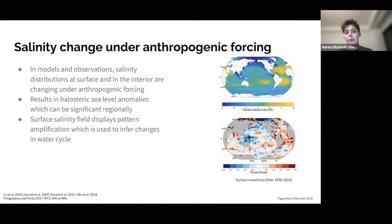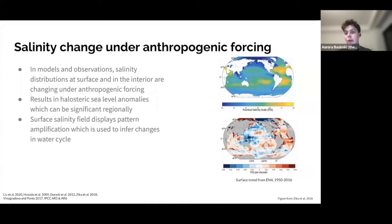This motivates why we care about interior salinity changes, because it results in these halosteric sea level anomalies. There's also interest in the surface salinity field, as it's often used to infer changes in the water cycle. The way surface salinity is known to change under anthropogenic forcing is called pattern amplification. Using surface salinity observations from the EN4 dataset from 1950 to 2016, the mean surface salinity and the trend over that period show that regions that are salty are getting saltier, and regions that are fresh are getting fresher — this is pattern amplification.